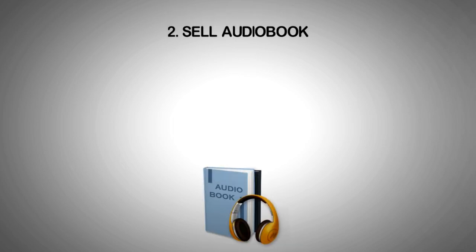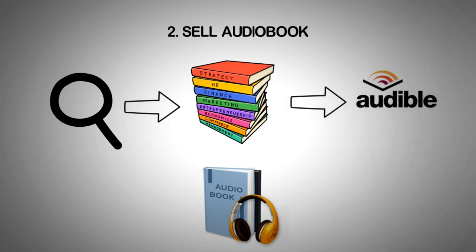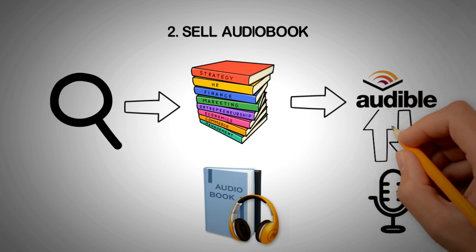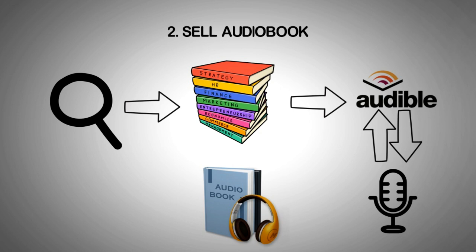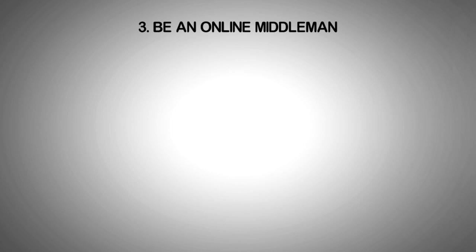The second method: sell your audiobook. Search and find books that are not yet available as audiobooks on Audible.com. Record them in the language you're comfortable with and upload the audiobook back to Audible.com. Whenever your audiobook sells, it generates passive income.